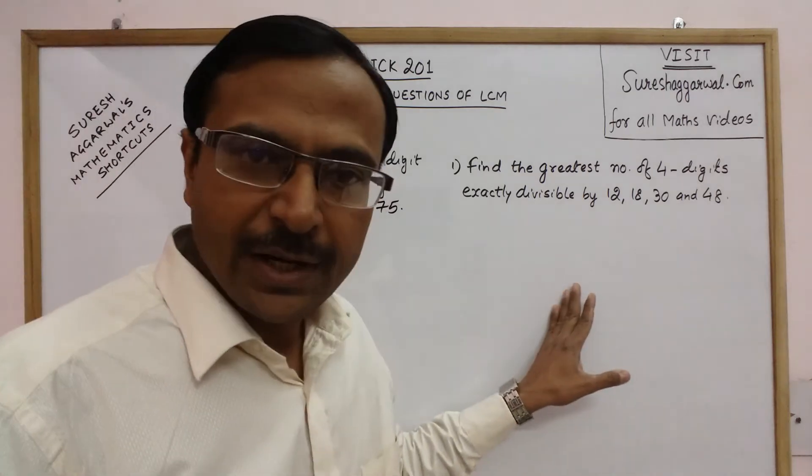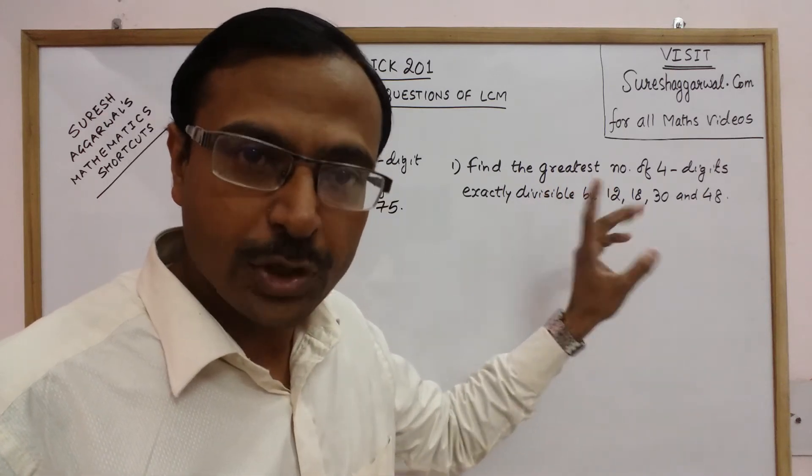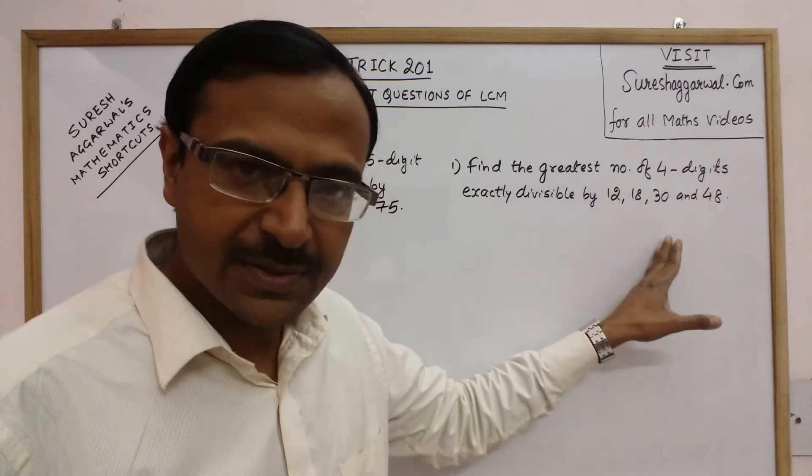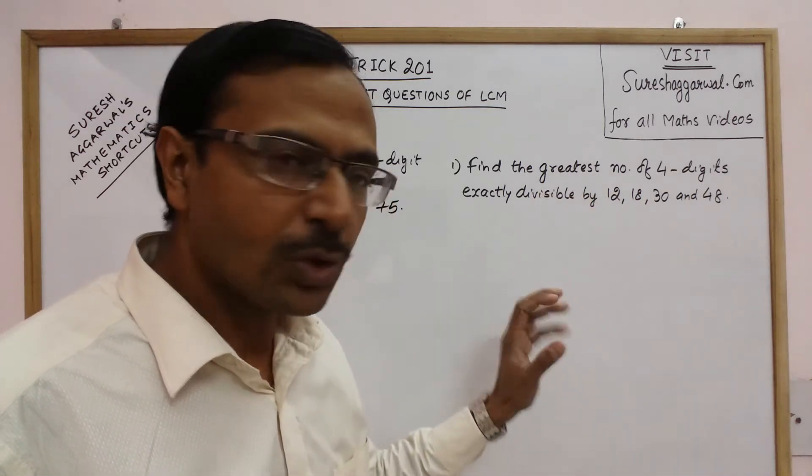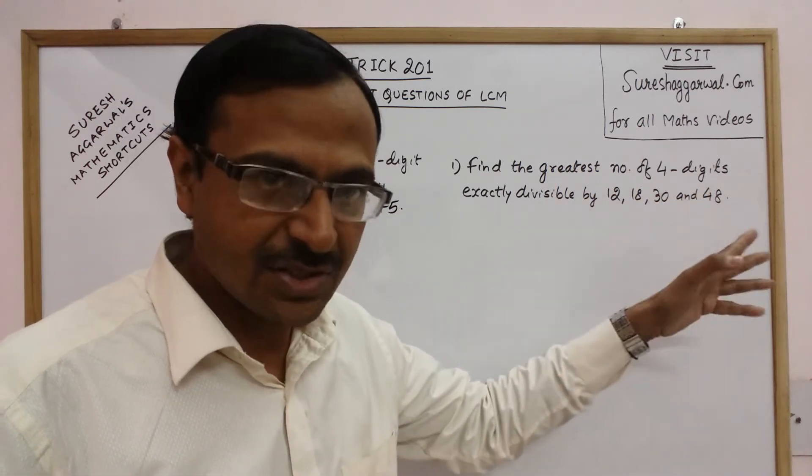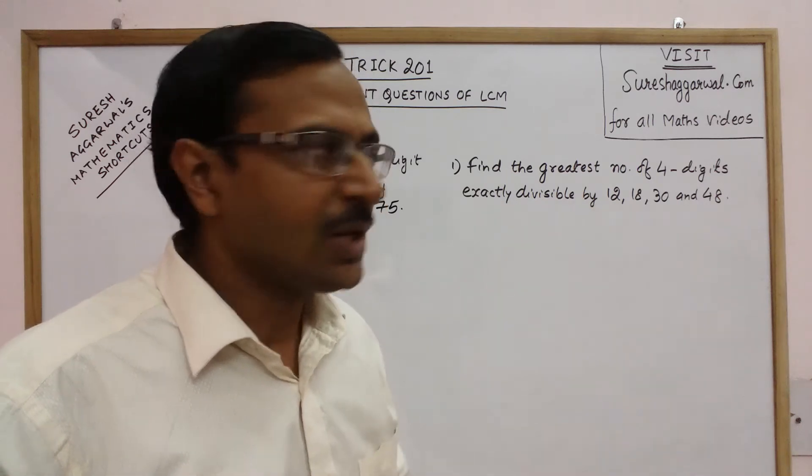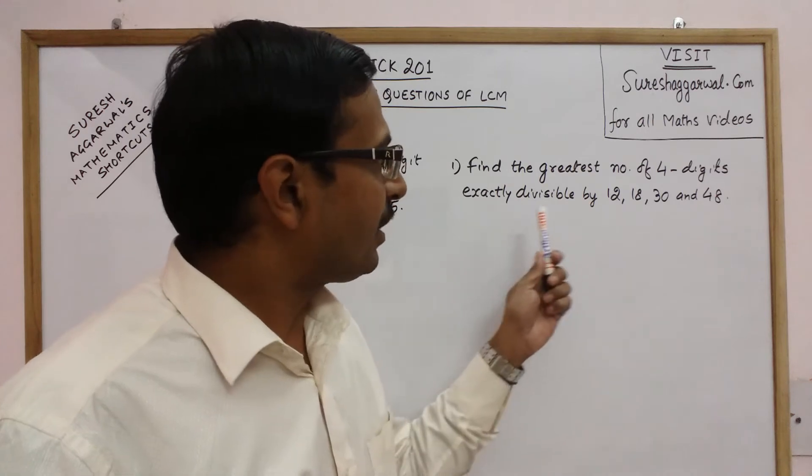The first problem which we are taking is to find the greatest number of four digits exactly divisible by some given numbers. Now you can generalize this question once you know the method. You can find the greatest number of three digits, five digits, six digits exactly divisible by a separate set of numbers. So for finding the greatest number divisible by some given numbers...